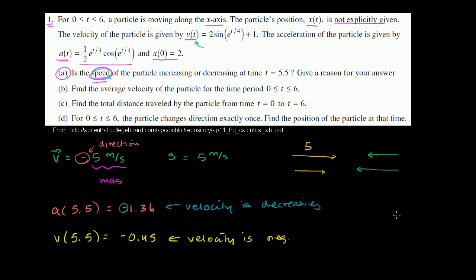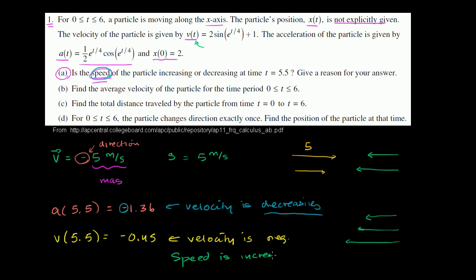We have the scenario where velocity is negative, meaning we're going in the leftward direction. Since the velocity is also decreasing, it becomes even more negative over time — the magnitude of the velocity is increasing. So the speed is increasing, even though the velocity is decreasing. To summarize: evaluate acceleration at 5.5 — it's negative, so velocity is decreasing. Evaluate velocity at 5.5 — it's negative. A negative value that is decreasing becomes more negative, so the magnitude increases, meaning speed is increasing.